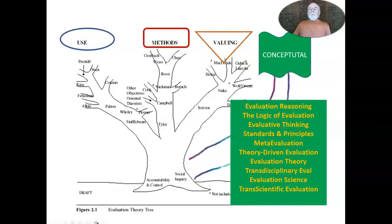Here's an example of what such a conceptual branch of the theory tree might include: evaluative reasoning, the logic of evaluation, evaluative thinking, standards and principles, meta-evaluation, theory-driven evaluation (which I think is more conceptual than methodological), evaluation theory itself, transdisciplinary evaluation, evaluation science, trans-scientific evaluation, and the evaluation theory tree as having a prominent place on the conceptual branch of evaluation roots.